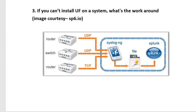The workaround would be syslog. For example, on routers, switches, and some systems where we cannot install the Universal Forwarder agent, you configure UDP or TCP protocols and send the logs to some common location — another system. On that system you install syslog-ng, a software tool that handles receiving the logs. Then on that system you install the Universal Forwarder and send the logs to a heavy forwarder or indexers.